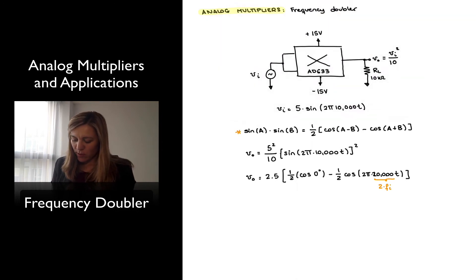So I can go ahead and continue expanding that. The cosine of zero degrees is going to be 1, so this is going to be 2.5 times one-half, or 1.25.